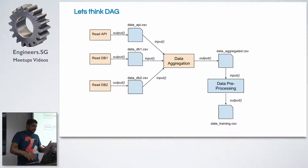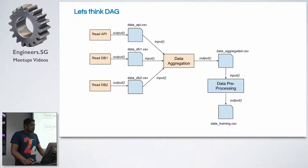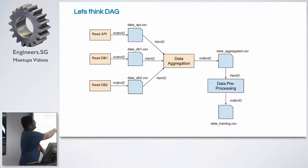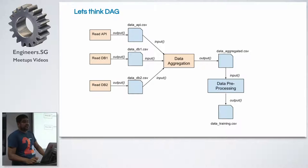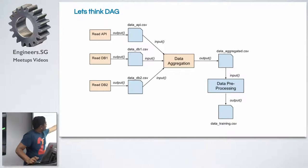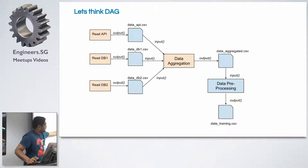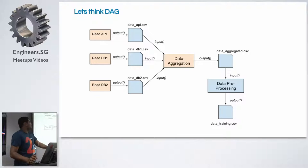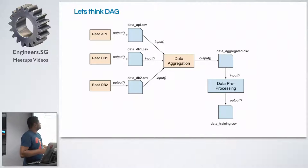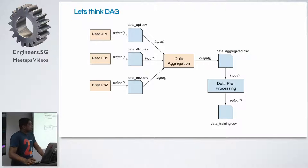Let's think about this whole flow from a different angle. Those in the Spark world will have heard of something called a DAG — a directed acyclic graph. Can we think of this whole workflow as a graph? Each task outputs a CSV file, which becomes the input for the next task. These files basically become your states. For example, the read API outputs data_api.csv, the DB reads output their respective CSVs, then data aggregation takes these three as inputs and outputs data_aggregated.csv.